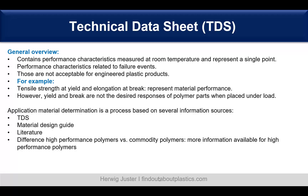This is the first thing we have to keep in mind when dealing with TDS. When you think of your application and when you set the material requirements, you start the search for information, and the TDS is usually the first source of information to check for application material determination. Then you might find a material design guide, and there is also general literature. For high performance polymers versus commodity polymers, there is more information available for high performance polymers.